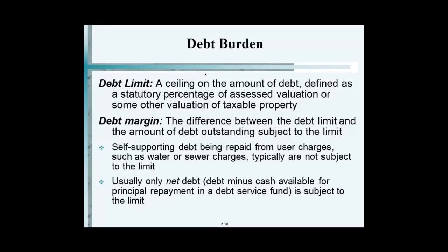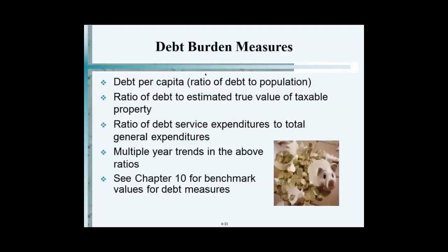So these are some of the debt measures — these are like ratios. Debt per capita: tell me, is a high debt per capita good or bad as a taxpayer? Bad. Ratio of debt to estimated true value of taxable property: is a high ratio good or bad? It's bad too, because you've got more debt compared to your taxable property. These are some of the measures that we use, and we'll really study this in Chapter 10.